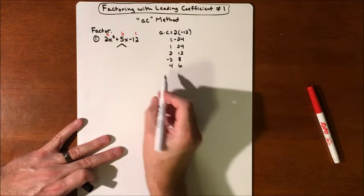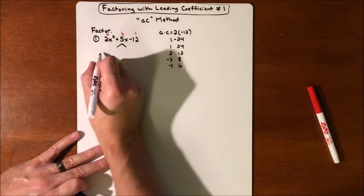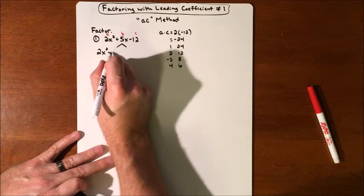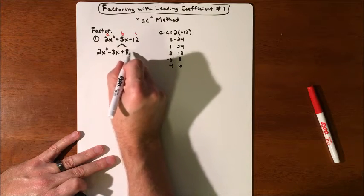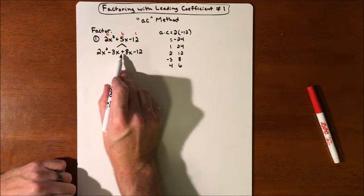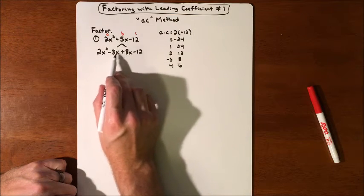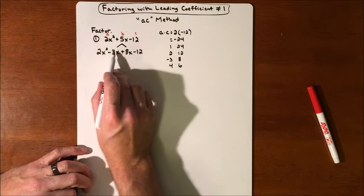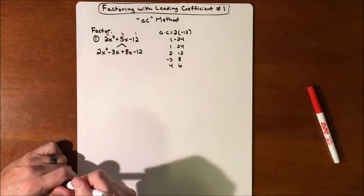What that does for us is it tells us how to break apart our middle term. We're going to break the middle term into 2x² minus 3x plus 8x minus 12. All that happened is the middle term was split into two terms; if you add them back together, they make 5x. You could have put the 8x first and the negative 3x second — it's going to give you the same factors in the end.